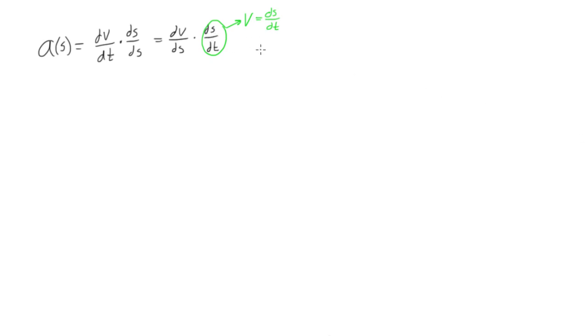So what we can do is we can rewrite that again. We'll say that this is all equal to dv ds times velocity. So now we'll just write it down here to be a little more clean. We have acceleration as a function of position is equal to dv over ds times v. Now we can take this ds and multiply it up here. So we will get a(s) ds is equal to v dv.